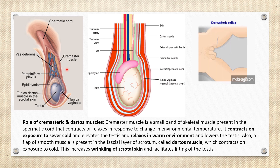Another mechanism is the dartos muscle — a flap of smooth muscle in the fascial layer of the scrotum. It contracts on exposure to cold, which increases the wrinkling of the scrotal skin and facilitates lifting of the testis. The cremaster muscle contraction and relaxation, together with the dartos muscle, help maintain a lesser temperature in the scrotum compared to core body temperature.